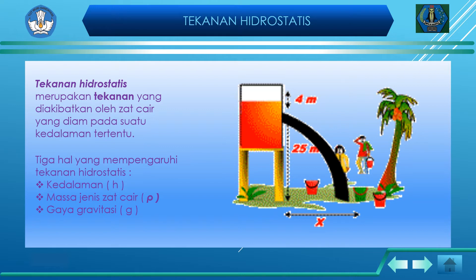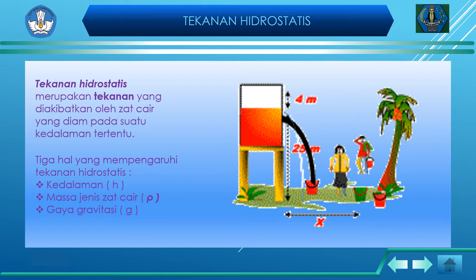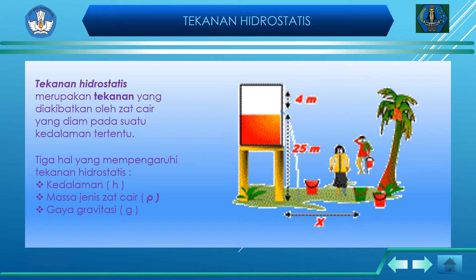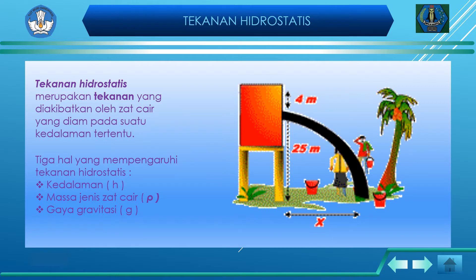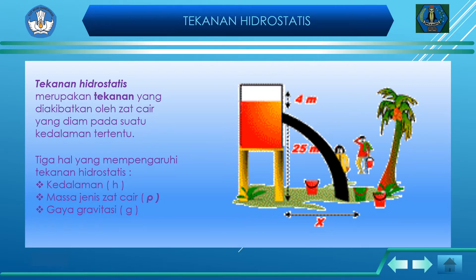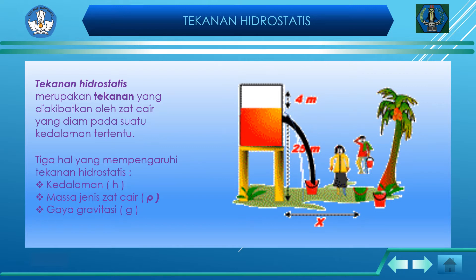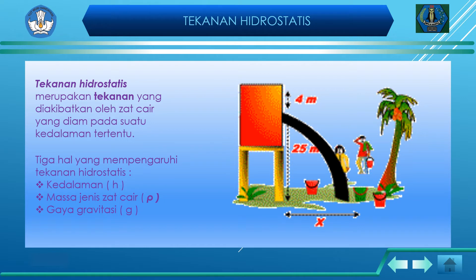Kita lanjutkan pokok bahasan yang kedua, yaitu tekanan hidrostatis. Tekanan hidrostatis merupakan tekanan yang dialami suatu benda di dalam zat cair dalam kondisi diam. Untuk lebih memahami, coba kalian perhatikan gambar animasi pancuran. Perbedaan apa yang bisa kalian lihat ketika air kondisi penuh dengan air menyusut terhadap jauh dekatnya jarak pancuran tersebut? Ternyata jarak yang dihasilkan berbeda. Mengapa demikian? Marilah kita bahas dan analisa bersama.